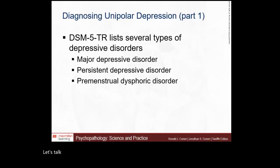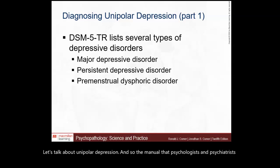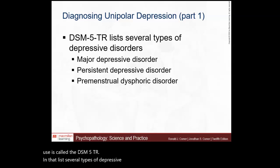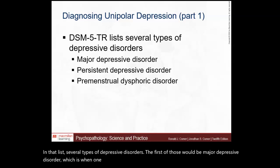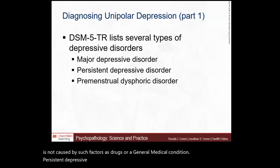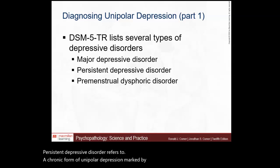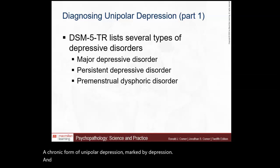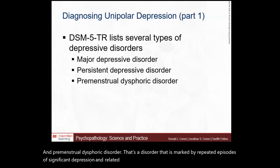The DSM-5-TR lists several types of depressive disorders. The first is major depressive disorder, which is a severe pattern of depression that is disabling and not caused by drugs or a general medical condition. Persistent depressive disorder is a chronic form of unipolar depression. Premenstrual dysphoric disorder is marked by repeated episodes of significant depression and related symptoms during the week before menstruation.